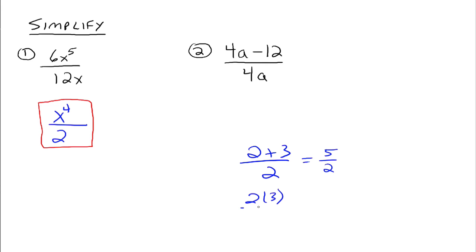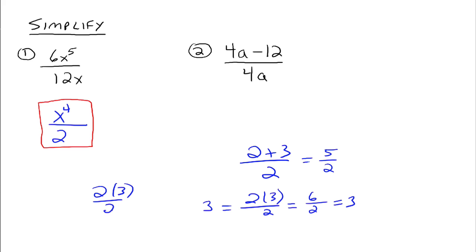What if it was 2 times 3 over 2? Now can we cancel the 2s and be left with 3? Following order of operations: 6 divided by 2 equals 3 — yes, this works when it's multiplication. When you have 2 times 3 divided by 2, those 2s can divide out to 1. That's really what it means: 2 times 3 divided by 2 is the same as 2 over 2 times 3, and 2 over 2 goes to 1, leaving 3. We don't get to do that when it's addition. That's a very common error, so be very careful.